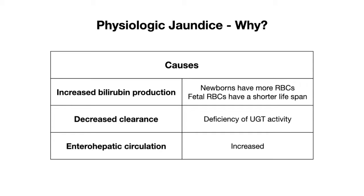A third reason is increased enterohepatic circulation. If you recall from the previous video on hyperbilirubinemia, the secreted conjugated bilirubin cannot be reabsorbed by the intestinal epithelial cells. That conjugated bilirubin is then taken up by intestinal bacterial enzymes and converted into a form that can be excreted.